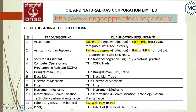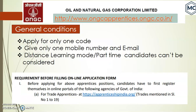For the assistant human resource post, candidates should have a bachelor's degree in BA or BBA. For laboratory assistant, as mentioned, BSc with PCM or PCB is required. These are the basic qualifications for each of the three posts.